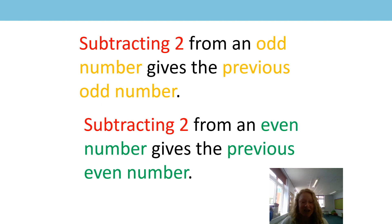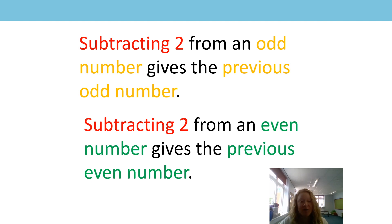So here are our two generalizations from today, and we can see some things are the same and some things are different. Can you spot something that's the same? Subtracting two from an odd number gives the previous odd number; subtracting two from an even number gives the previous even number. In both of them we're subtracting two, and also: if you start with an odd number you'll still get an odd number, and if you start with an even number you'll still get an even number when you subtract two.